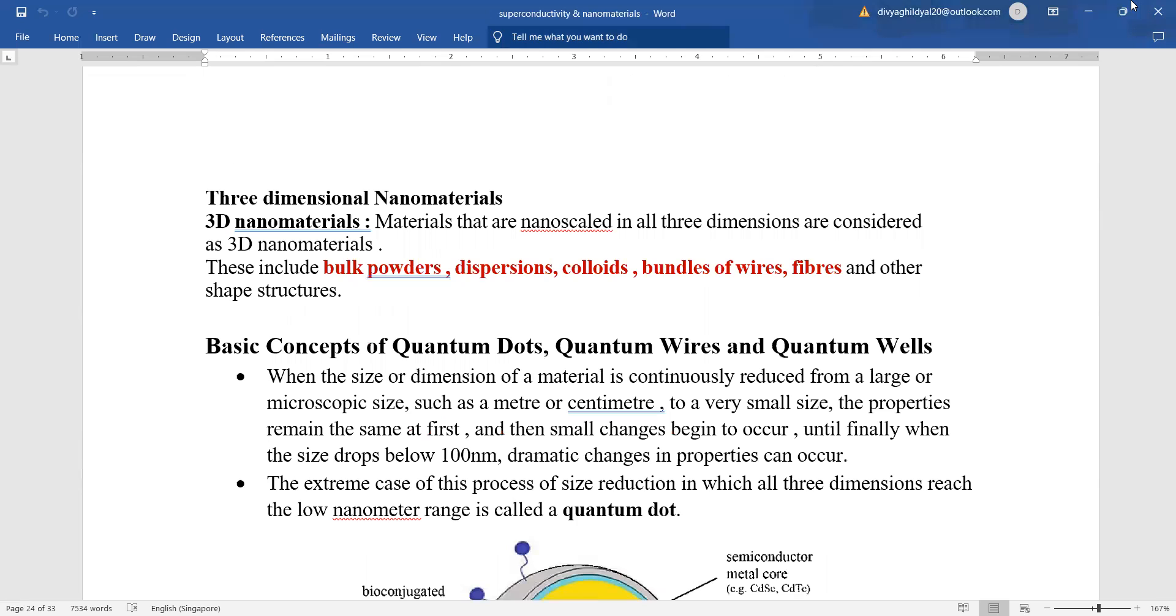Three-dimensional nanostructures: materials that are nanoscaled in all three dimensions are considered as three-dimensional nanomaterials. They include bulk materials like bulk powders, colloids, bundles of wires, fibers, and others.